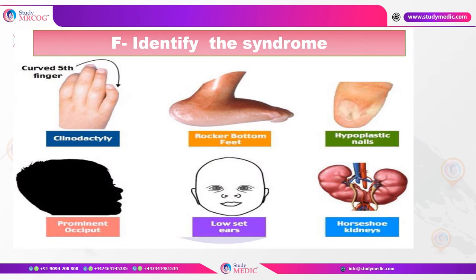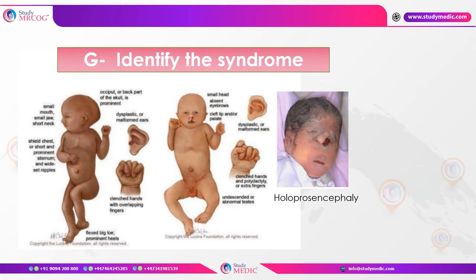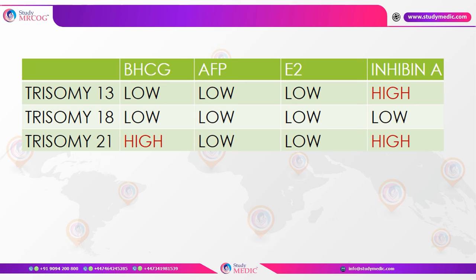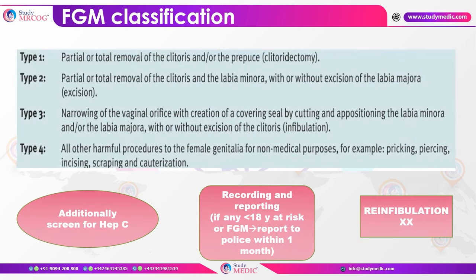Syndrome identification: Clinodactyly, hypoplastic nails, horseshoe kidneys, low-set ears, and prominently rocker-bottom feet are features of Edwards syndrome (Trisomy 18). Holoprosencephaly and cleft lip and palate — midline abnormalities — are suggestive of Trisomy 13 or Patau syndrome. Regarding serum markers: all levels are low in Trisomy 18; beta-hCG and inhibin-A are high in Trisomy 21; only high inhibin-A with the rest low is seen in Trisomy 13.